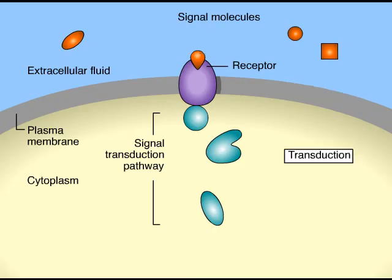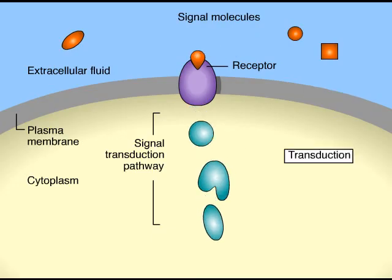Signal transduction converts the change in the receptor to a form that can bring about a cellular response. This might involve a series of steps—a signal transduction pathway—that alters and amplifies the change.